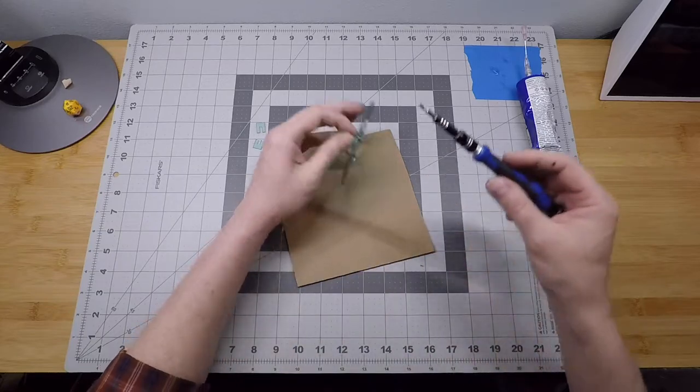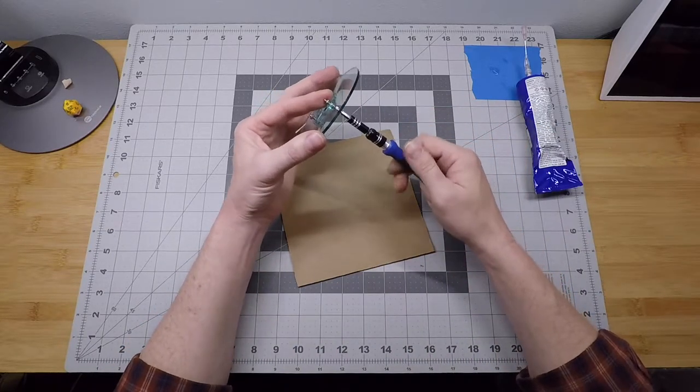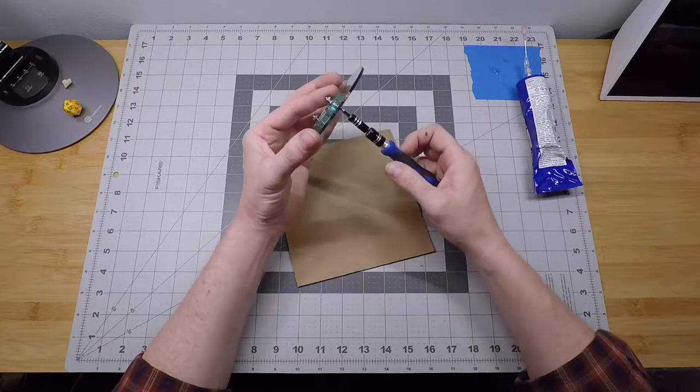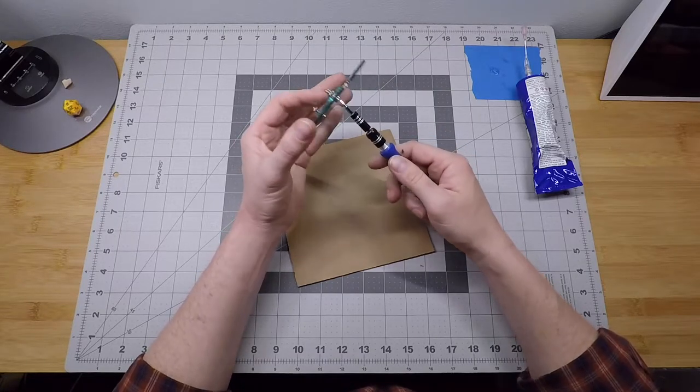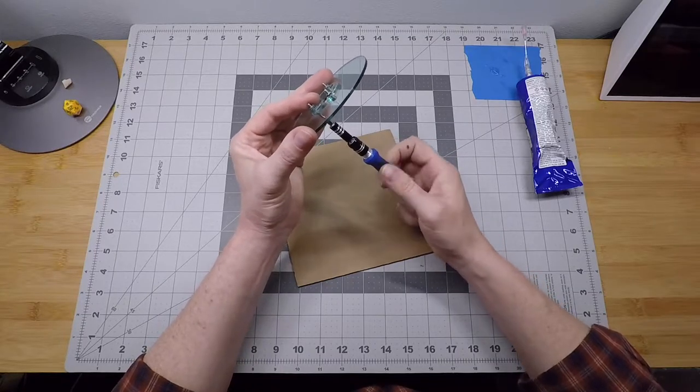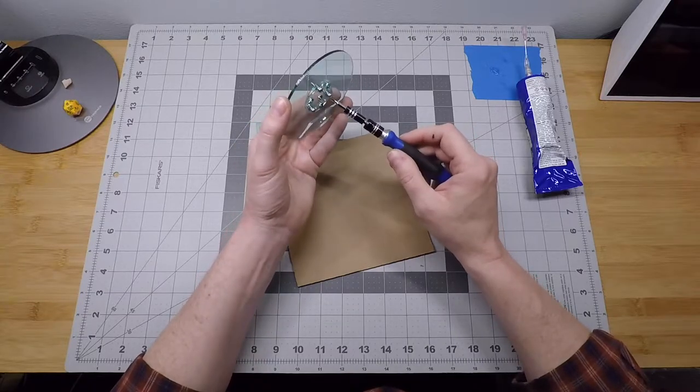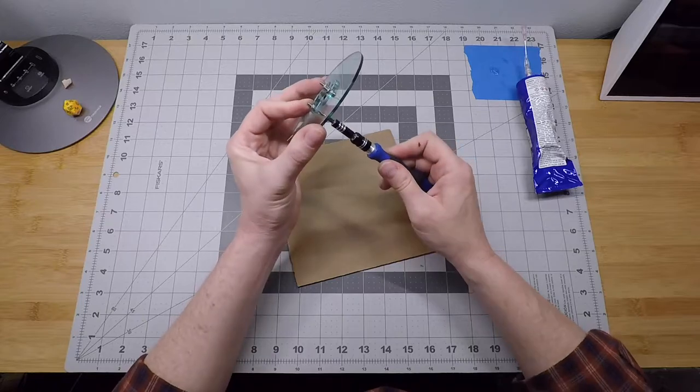Alright, so now that all three are in, we'll tighten this up. Go around like if you were putting lug nuts on a car, just keep sort of going around. Instead of tightening one all the way first, just make two trips maybe around. Get them all set, and then get them all firm on the second time through.